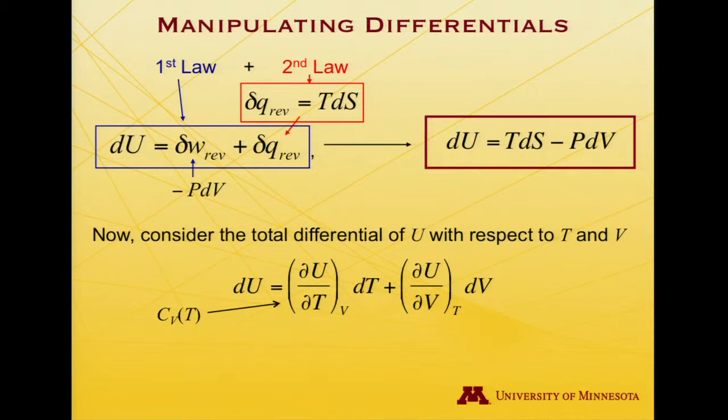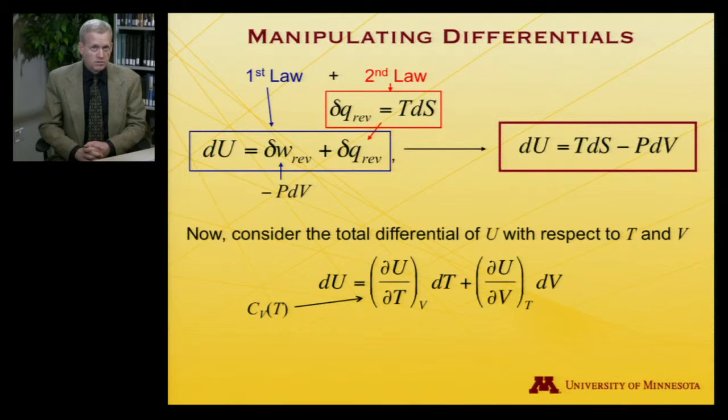And actually, we've already seen one of these partial derivatives before. dU/dT at constant V is defined to be the constant volume heat capacity since we're holding volume constant. So that's Cv, and it may be a function of T.